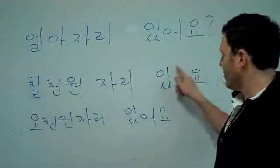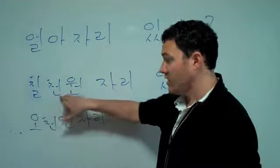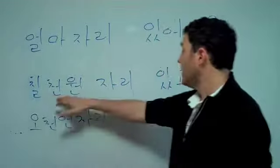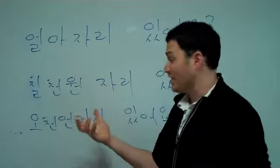If you watch the taxi video, we talked about this, 고 just means and. So, 7,000원 자리, one that's worth 7,000원. 7,000원 자리 있고. We have one that's worth 7,000원.